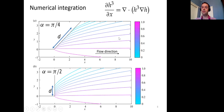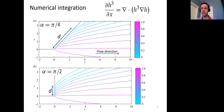We integrate the system numerically using a finite element method. These are contour plots of the flow thickness showing the contact line for α = π/4 and α = π/2, with flow direction going from left to right and the detachment distance d marked. I'm happy to answer questions about how this numerical method works but won't go into details now.